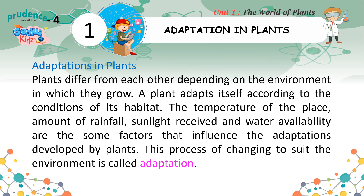Adaptations in plants: Plants differ from each other depending on the environment in which they grow. A plant adapts itself according to the conditions of its habitat. The temperature of the place, amount of rainfall, sunlight received, and water availability are some factors that influence the adaptations developed by plants. This process of changing to suit the environment is called adaptation.